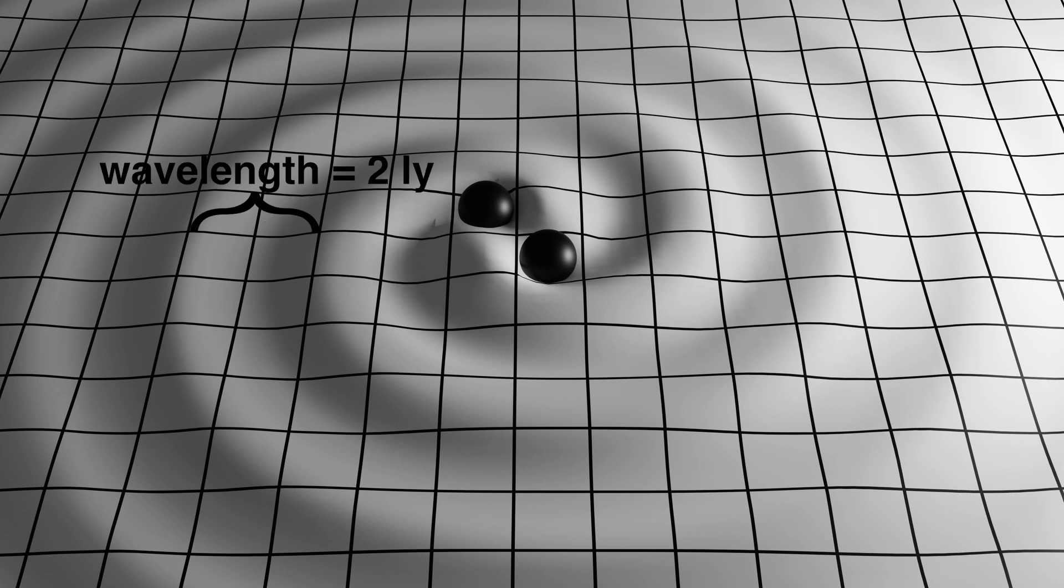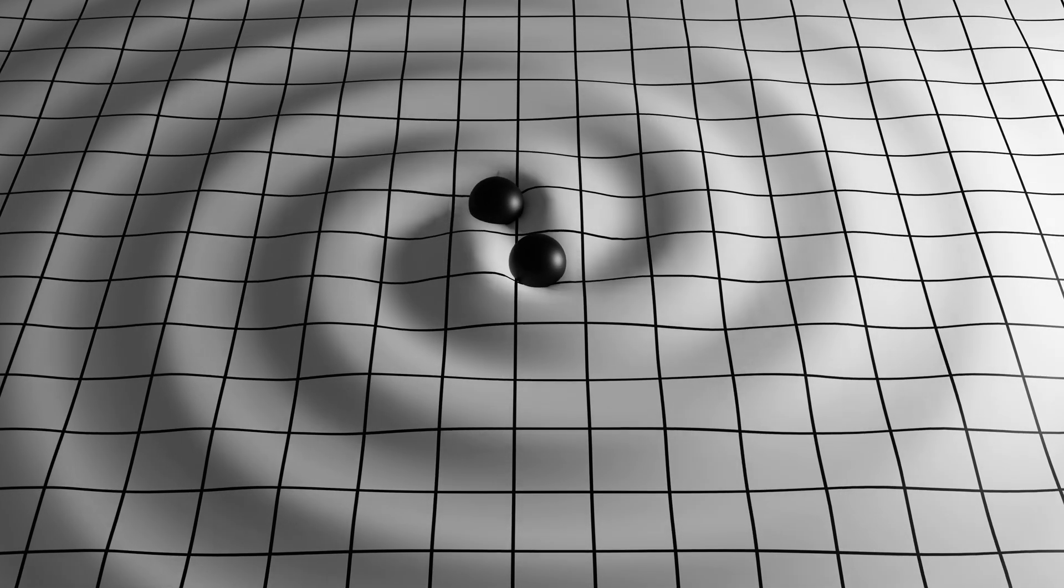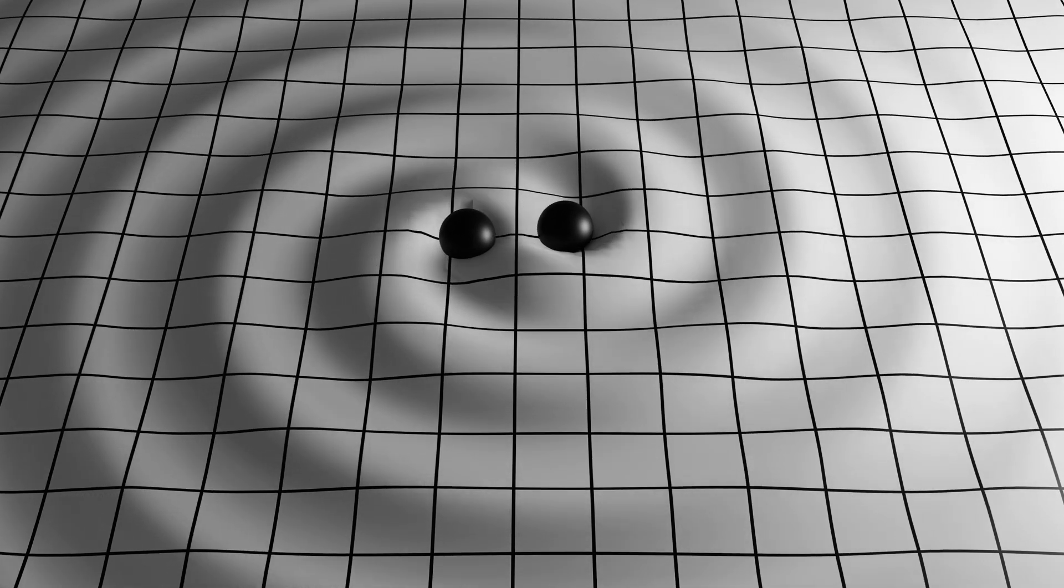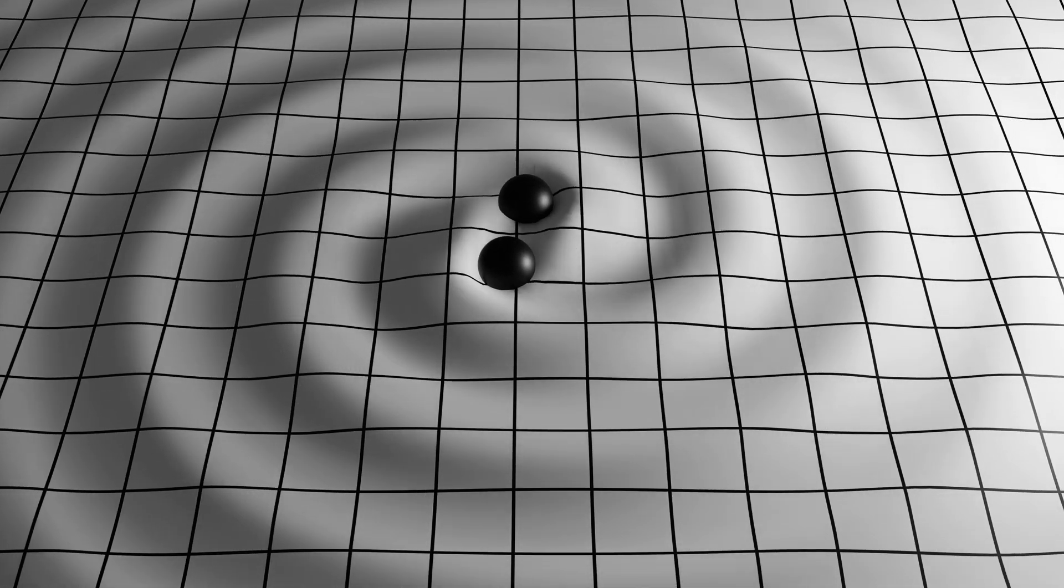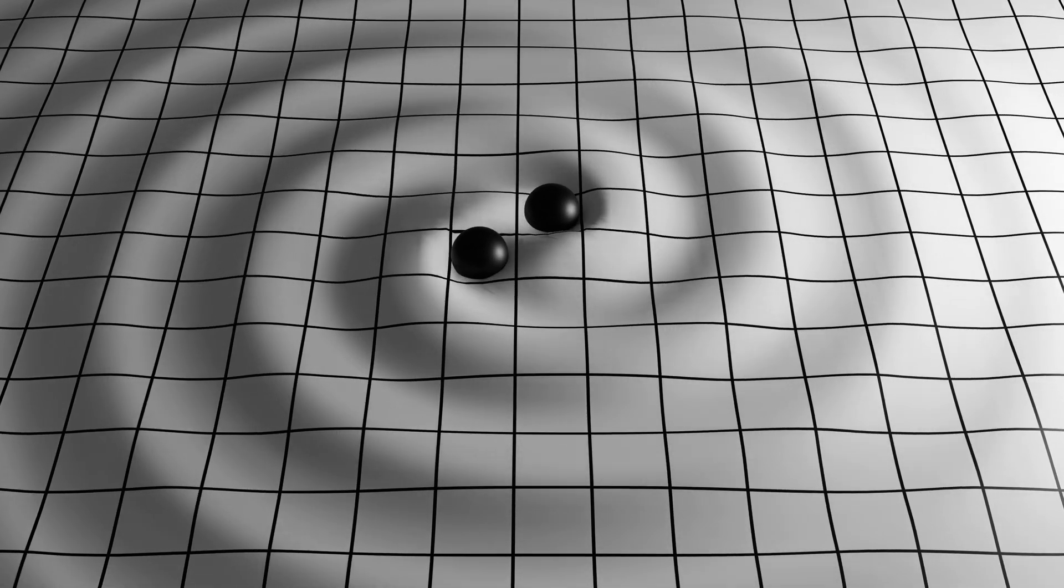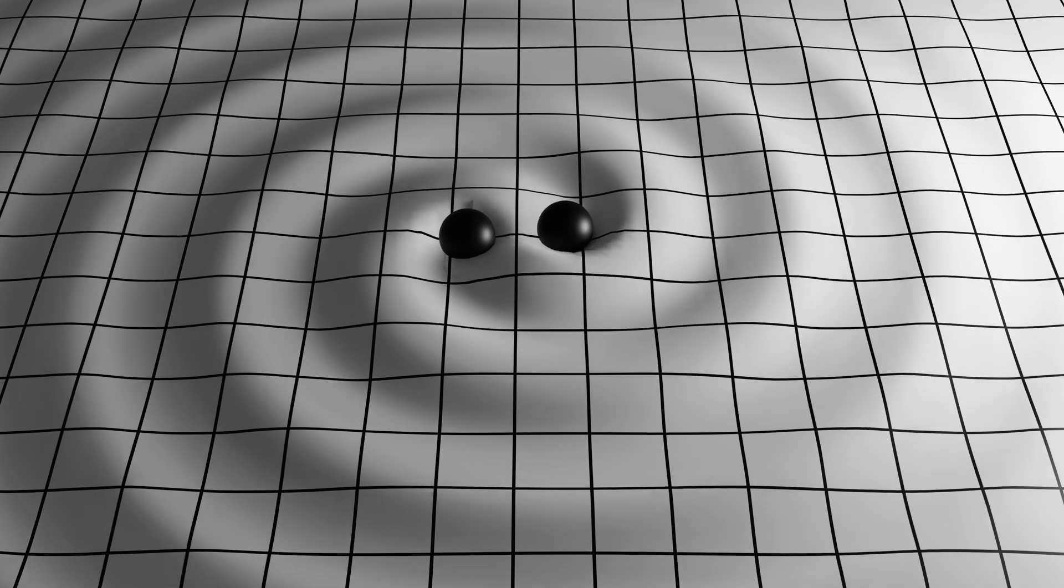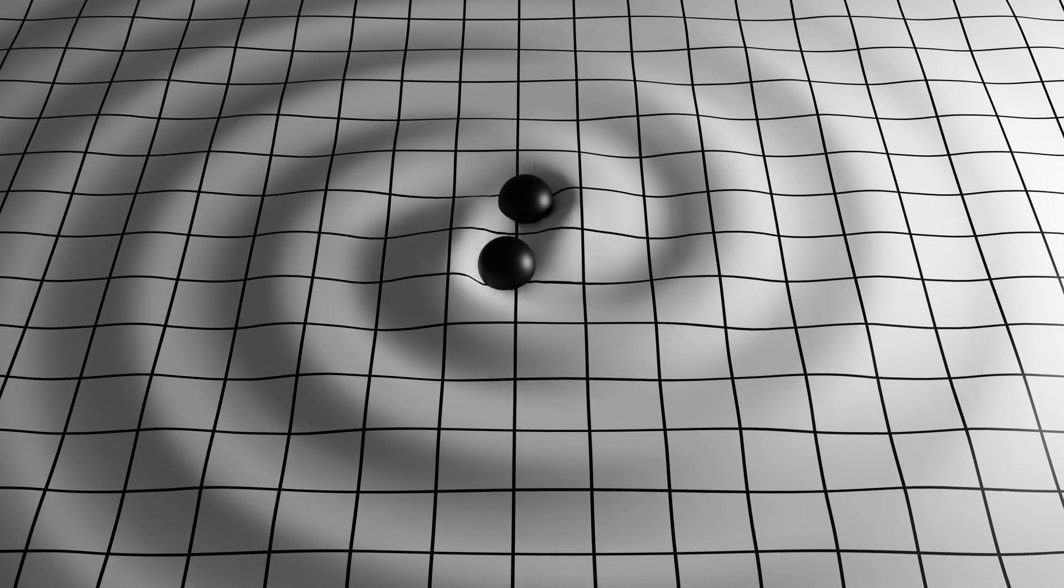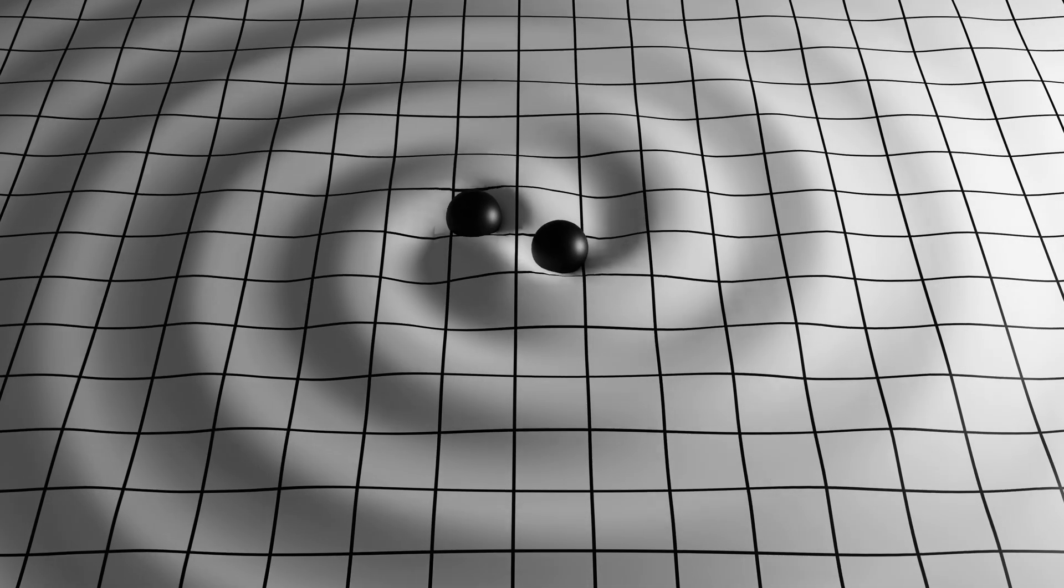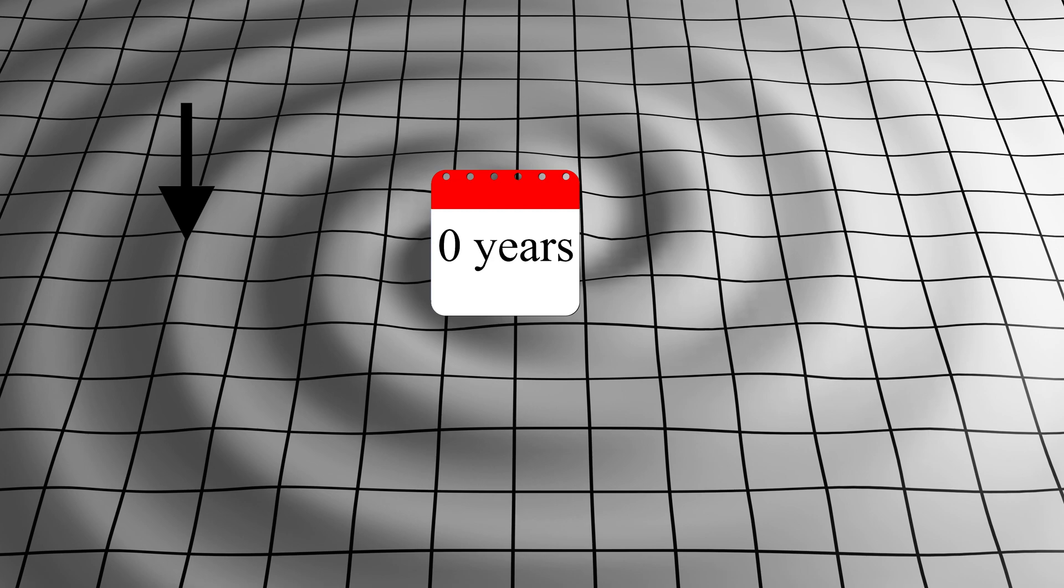Another fundamental property of waves is the frequency. The frequency of a wave is the number of wavelengths that pass a region of space per unit time. Since we know the wavelength is two light years, and we know that gravitational waves are traveling at the speed of light, we can easily figure out the frequency. Let's count how long it takes one wavelength to pass by this region of space. So we'll start with zero years as the first peak passes this point, and count until the next peak passes.